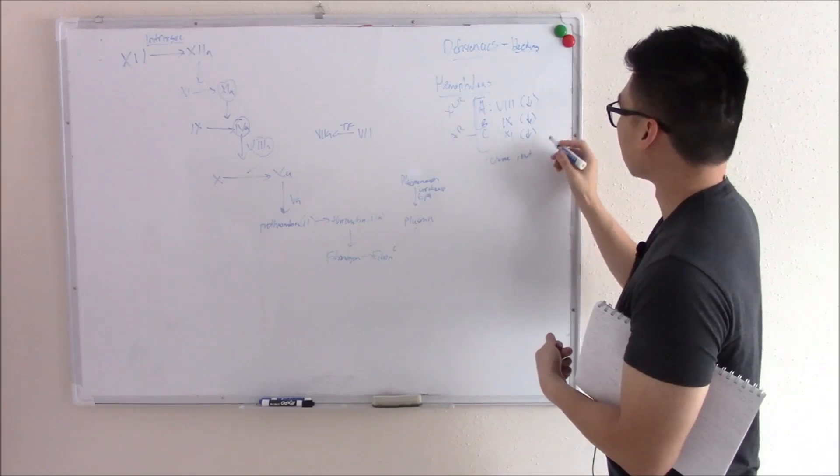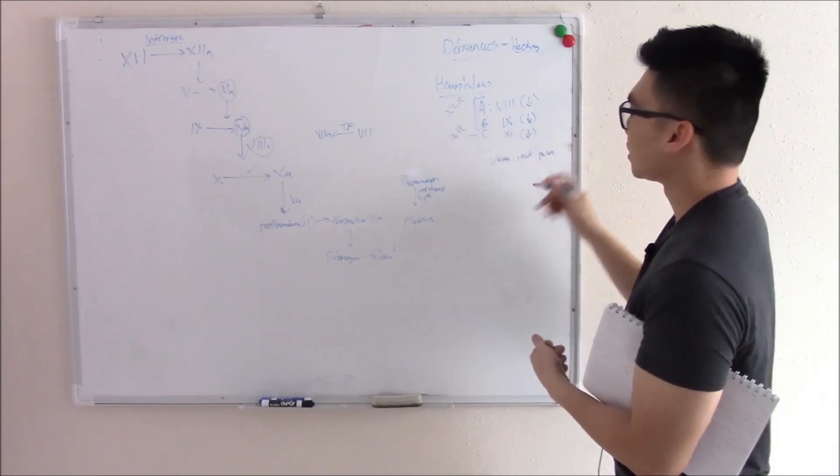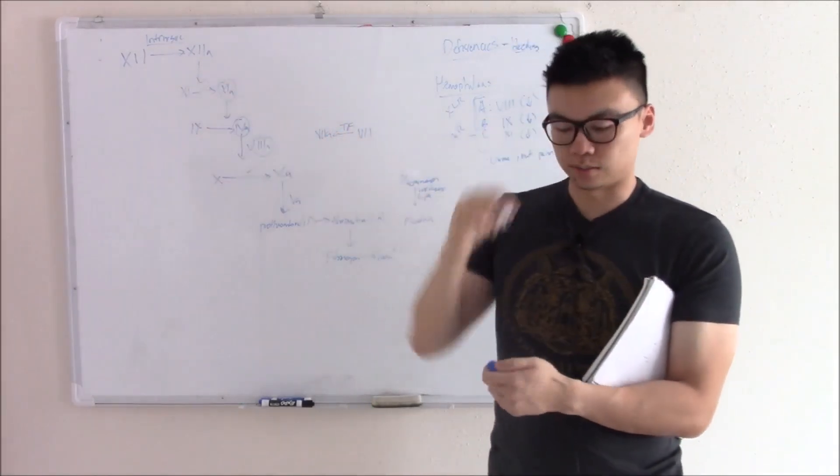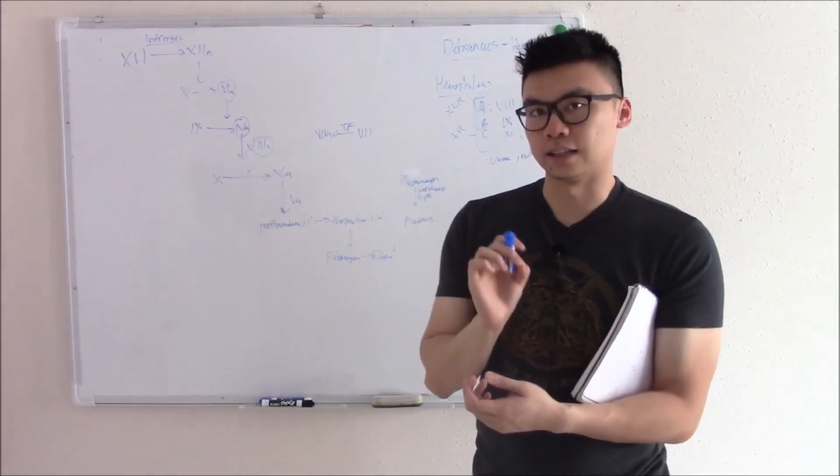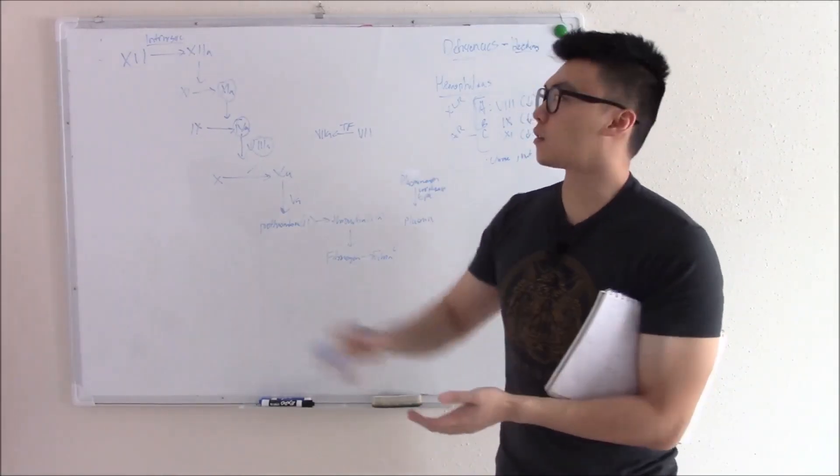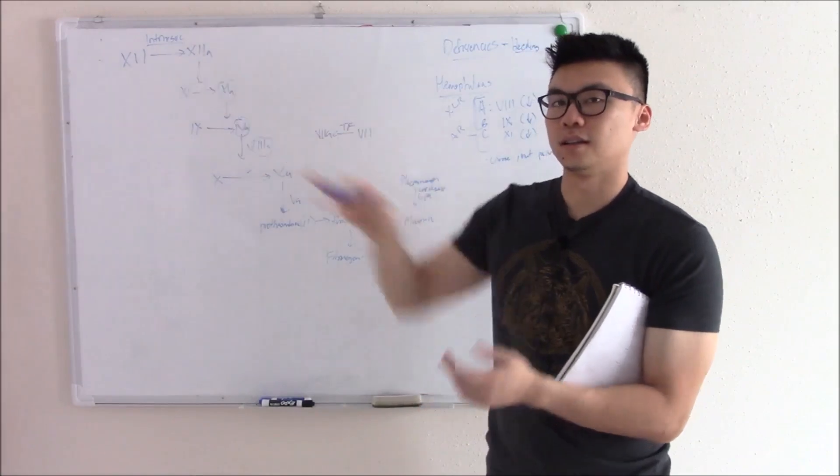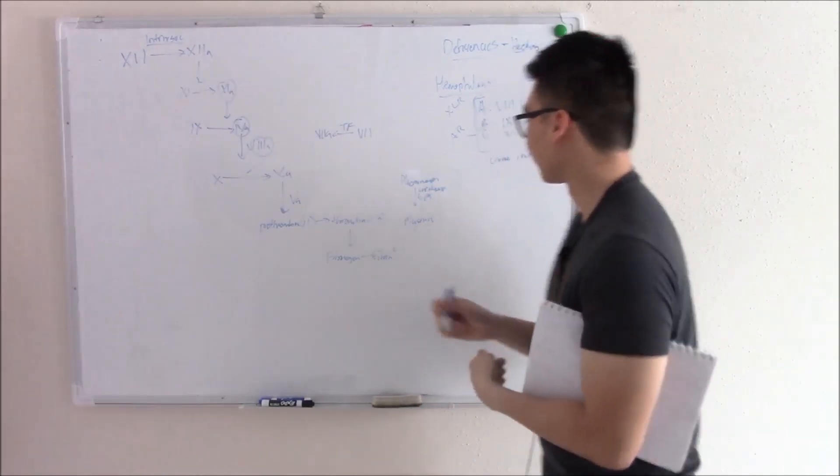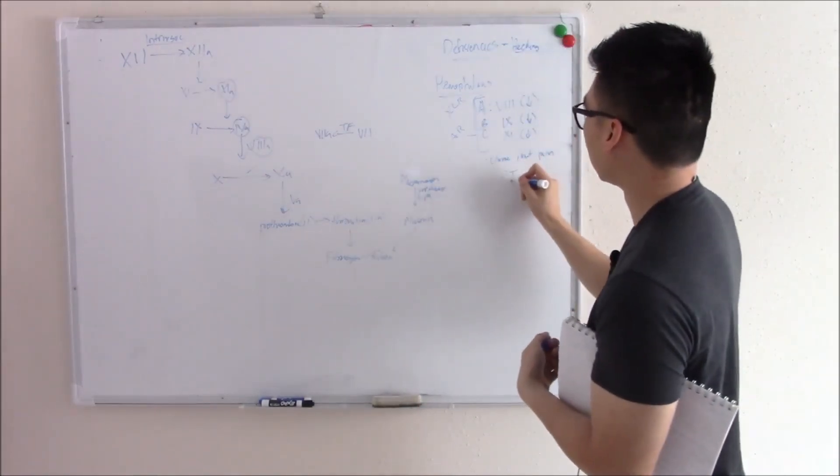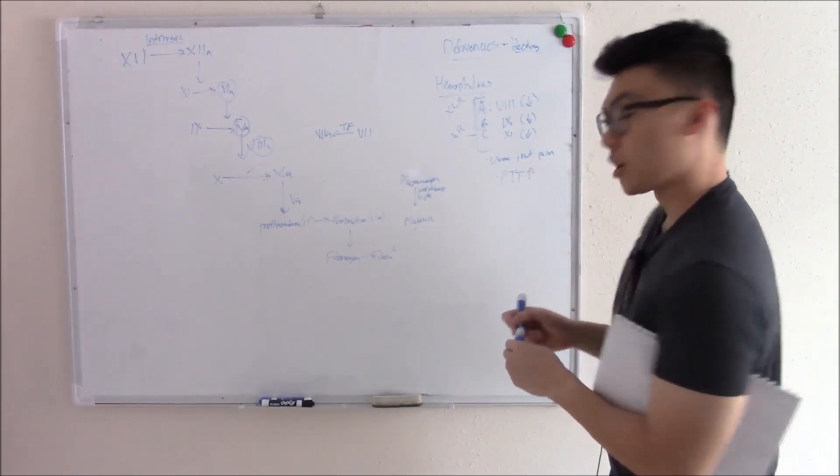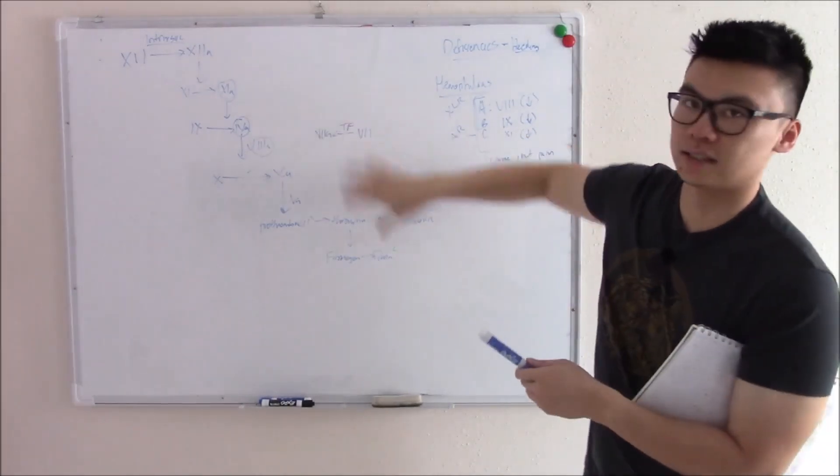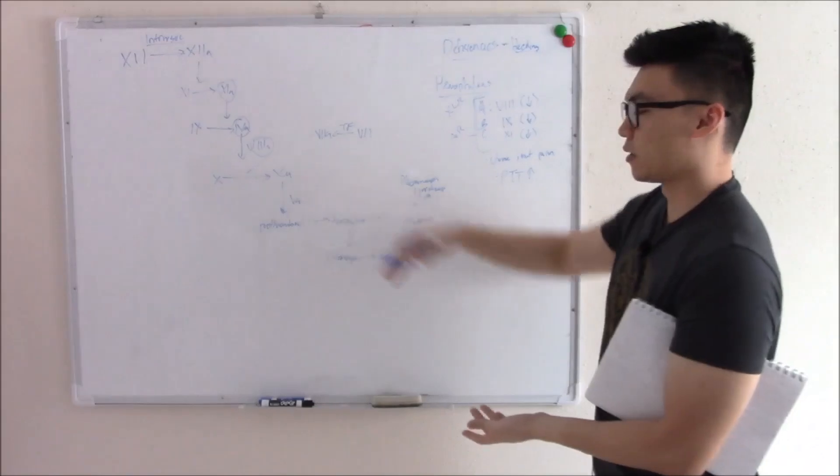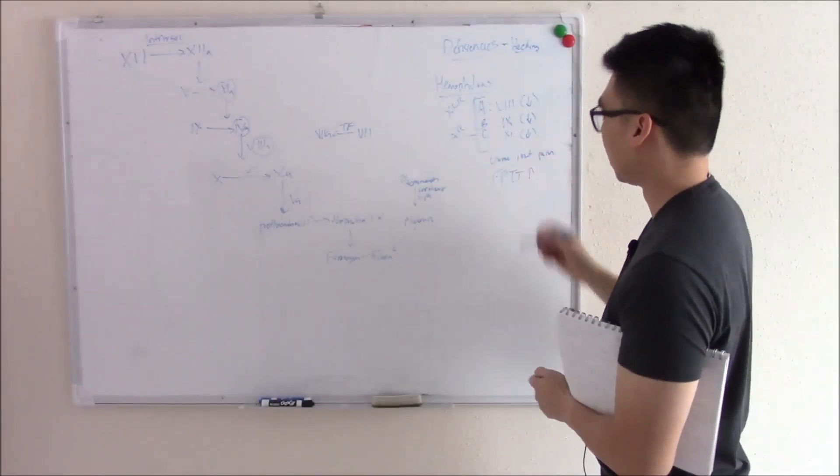Because it is all due to defects in your intrinsic system, you're going to have abnormal lab findings. Do you remember the test that tests for the intrinsic pathway? That'd be your PTT. So PTT is elevated. How about your PT? PT is extrinsic, has nothing to do with it. How about your bleeding time? Bleeding time is platelets, has nothing to do with it. So PTT is elevated.